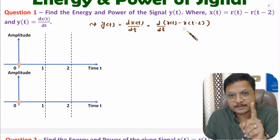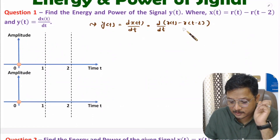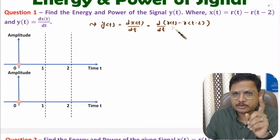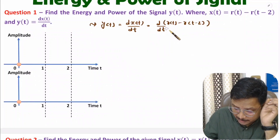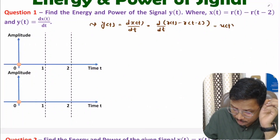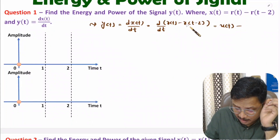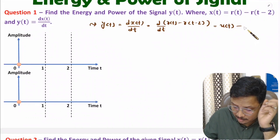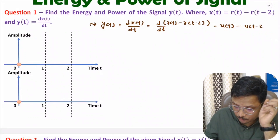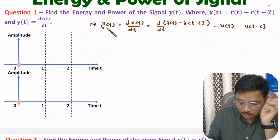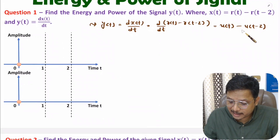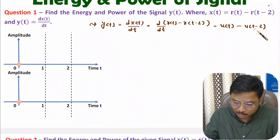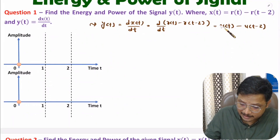Differentiation of a step signal is an impulse signal. So here we have a ramp signal, and differentiation of the ramp signal is a step signal. So differentiation of r(t) with respect to time is u(t) minus u(t-2). Now I need to represent y(t) in the form of a mathematical function, so first I need to plot it. Here we have y(t) that is u(t) minus u(t-2).